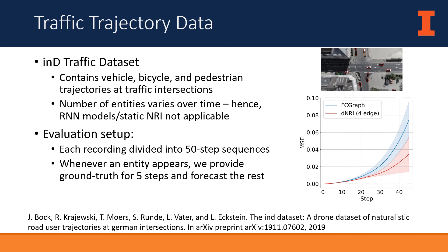Finally, we study the IND traffic dataset, consisting of recorded vehicle, bicycle, and pedestrian trajectories at traffic intersections. Unlike other datasets, the number of entities varies over time as they enter and leave the intersection. Consequently, RNN models and static NRI, which assume a constant number of entities, cannot be used. For evaluation, recordings are divided into 50-step sequences; whenever an entity appears, its position is provided as ground truth for five steps and the model forecasts the rest. DNRI, which models multiple interaction types, outperforms the FCGraph baseline.